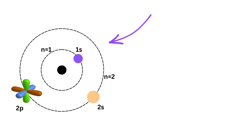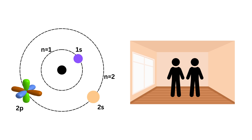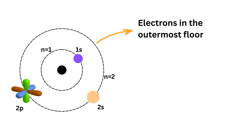This is how we can represent the energy levels, or floors, and orbitals, or rooms, using a simple 2D representation — but remember, actual orbitals are 3D like this. Each room can hold a certain number of electrons, just like each bedroom can only fit so many people comfortably. The electrons that stay on the outermost floor — the highest n level — are called valence electrons.